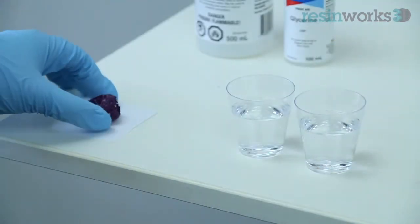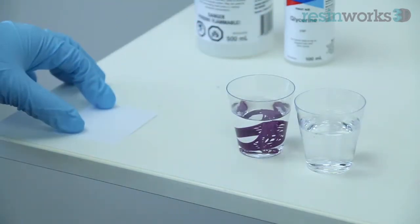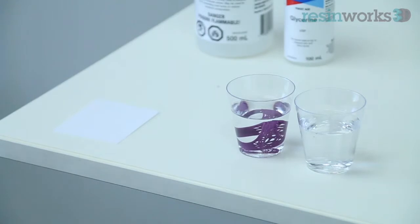Once you finish pouring the IPA, place the model into the first cup. Leave the model in the cup for 30 to 60 seconds. If you leave any models in the IPA for an extended period of time, it may cause cracks in your printed model.